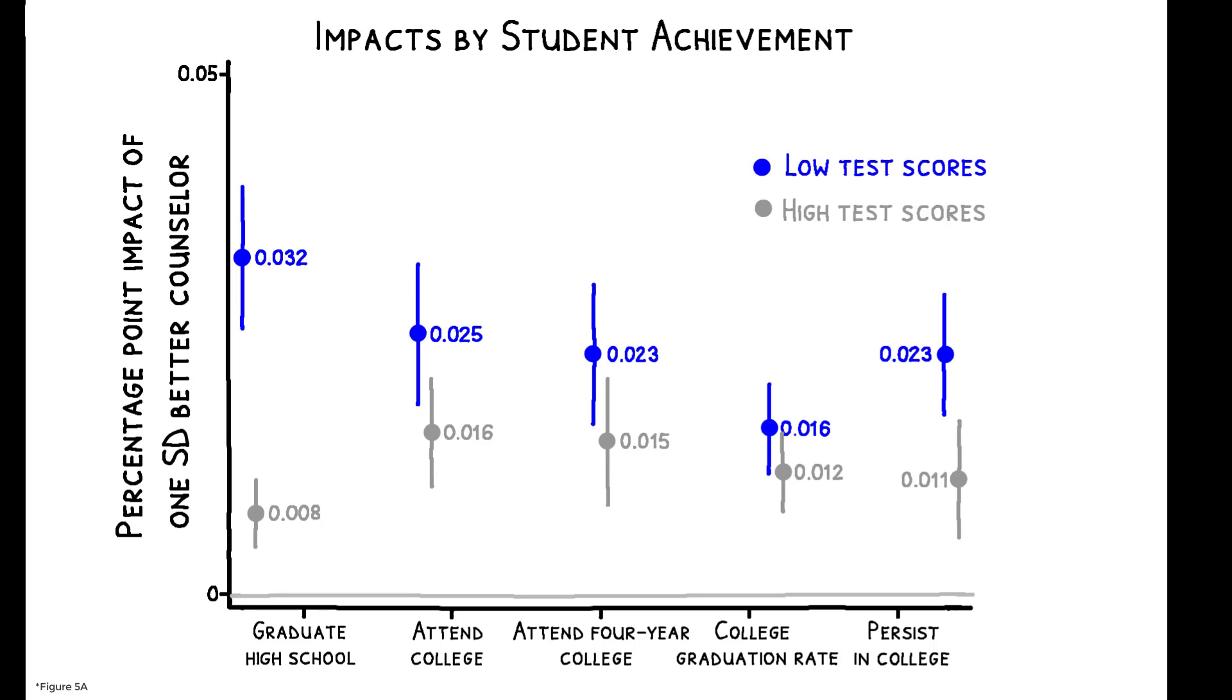Counselor effects are also largest for low-achieving students. While a one standard deviation improvement in counselor value-added is associated with a 3.2 percentage point increase in high school graduation rates and a 2.5 percentage point increase in college attendance for low-achieving students,